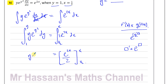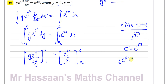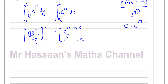Using the reverse chain rule, I integrate y·e^(y²) as y·e^(y²) divided by the differential of the inner function, which is 2y. The y's cancel, leaving e^(y²)/2. We can verify this: differentiating e^(y²)/2 keeps it the same, then multiplies by the chain rule factor 2y, the 2s cancel, and we get y·e^(y²) — exactly what we started with. So the integration is confirmed correct.